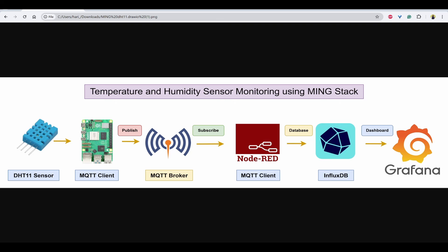The data flow of this project is as per the flow diagram shown. We use a DHT11 temperature and humidity sensor interfaced with Raspberry Pi. We run Python code on Raspberry Pi to publish sensor data using MQTT to the Mosquitto MQTT broker. Then we use Node-RED to subscribe to the MQTT data and write it to InfluxDB, which is a time series NoSQL database. Finally, we use Grafana, which is an analytical and visualization application, to monitor the sensor data.